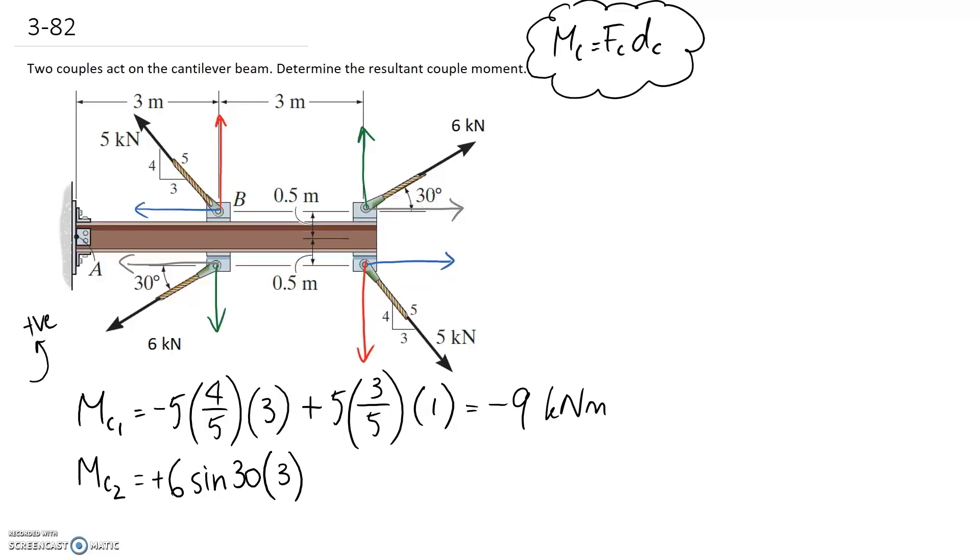Taking the horizontal parts of each of these forces, it's going to be 6 cos 30. Separation distance between these two is going to be the 1 meter between them. And the direction of these two working against each other is going to be clockwise, so it's going to be a negative value. So if you put both of these together, it ends up being about negative 2.2 kilonewton meters.